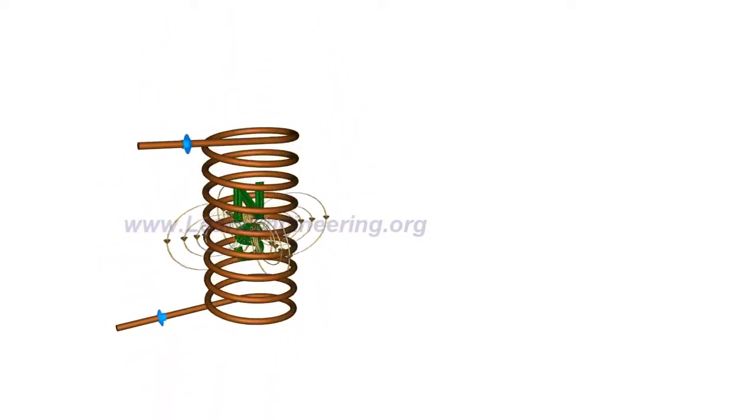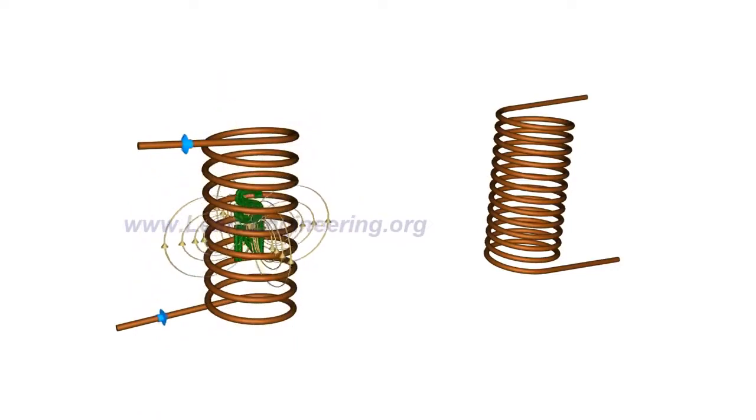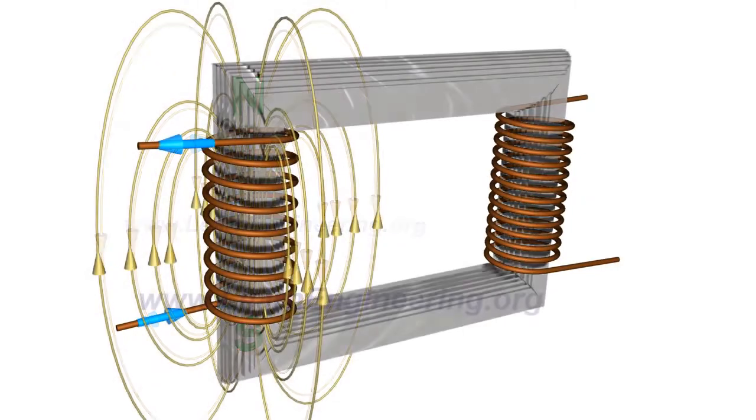This magnetic flux can be effectively linked to a secondary winding with the help of a core made up of ferromagnetic material.